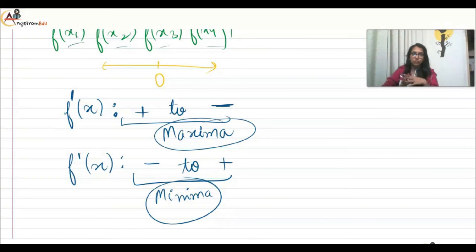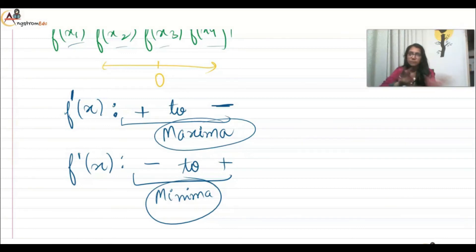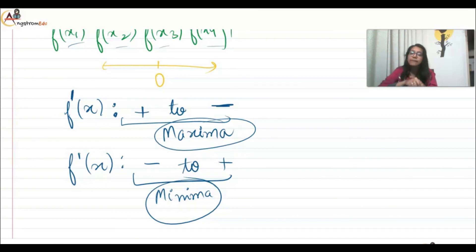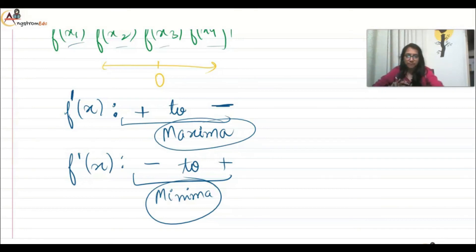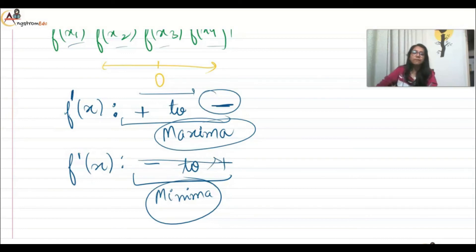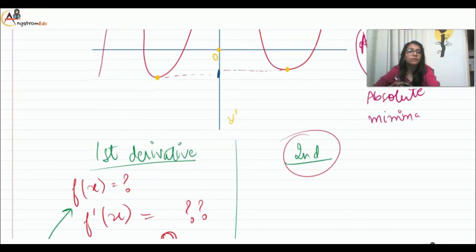To summarize the first derivative method: take a function, differentiate it, set it to zero to get values of x, then check the sign of the derivative around those values. If it's going from positive to negative, it's a maxima. If it's going from negative to positive, it's a minima. Approaching negative means maxima; approaching positive means minima.